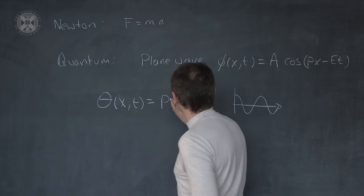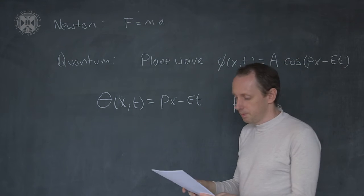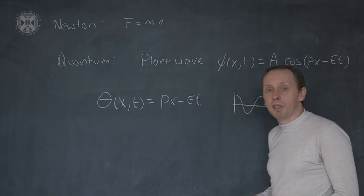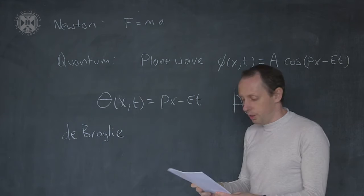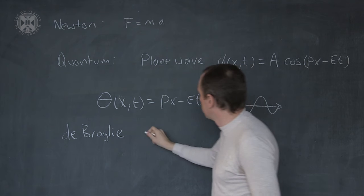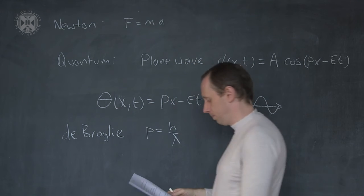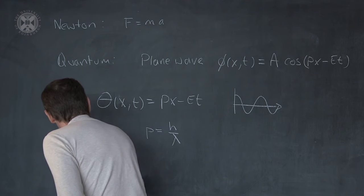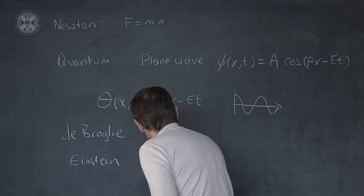We can think of theta as a kind of angle, the phase angle. The amount of energy in each wavelength is quantized. De Broglie told us that the momentum is related to how tight these ripples are. Einstein told us energy is related to how fast the wave oscillates in time.